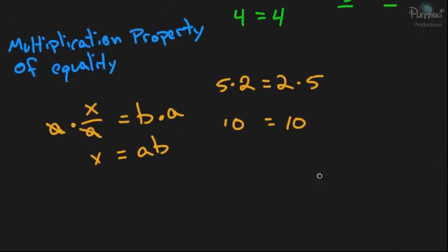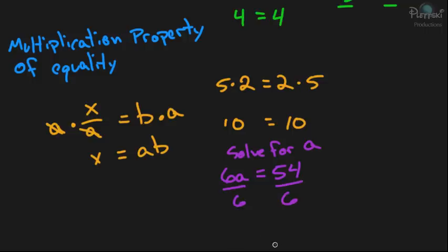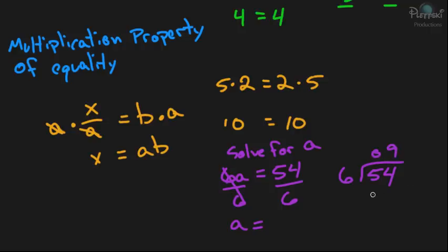Let's see an example. If we have 6a equals 54 and we want to solve for a, what we can do is divide both sides by 6. 6a divided by 6 — the 6s cancel out and you're just left with a. And then 54 divided by 6: 6 doesn't go into 5, but 6 does go into 54 — 9 times, since 9 times 6 is 54. So 54 divided by 6 gives you 9, and a equals 9.